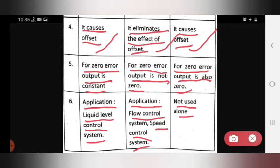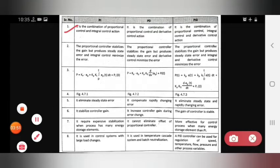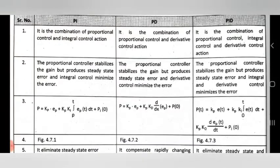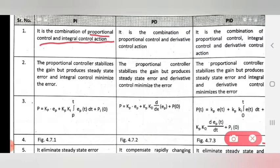Now the second comparison: PI, PD, and PID controllers. The first point is their composition. PI is the combination of proportional and integral control. PD is the combination of proportional and derivative control. PID is the combination of all three: proportional, integral, and derivative control actions.